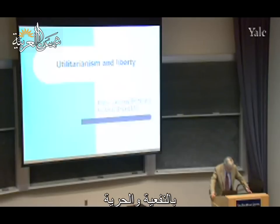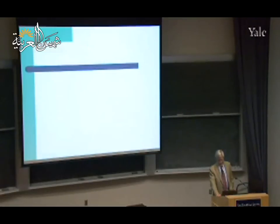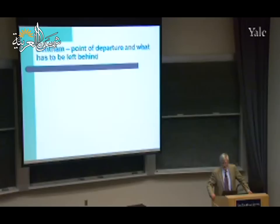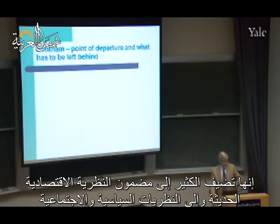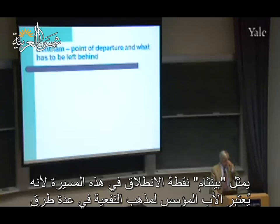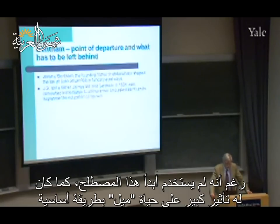Utilitarianism and liberty - the long road from Jeremy Bentham to John Stuart Mill. Utilitarianism is a fundamentally important proposition: it informs modern economic theory and political and social theories in the rational choice mode of theorizing. The point of departure is Bentham, who in many ways is the founding father of utilitarianism, though he never used the term, and he influenced the life of John Stuart Mill in a major way.